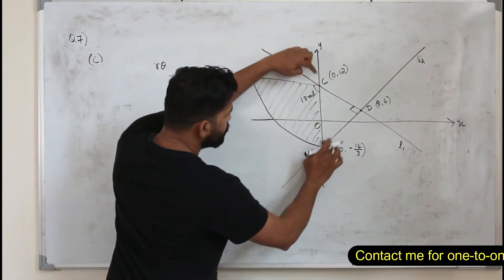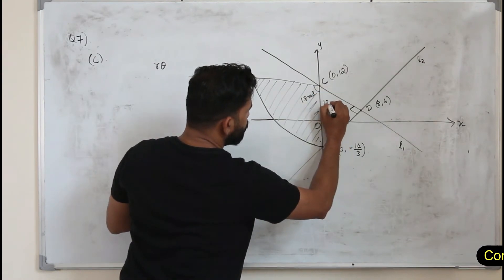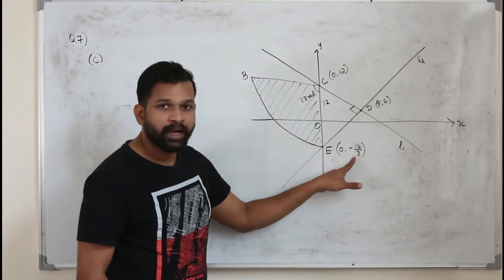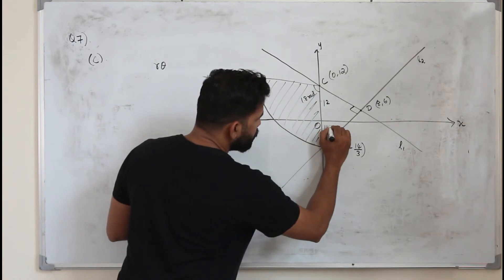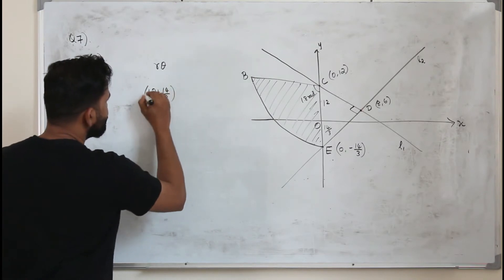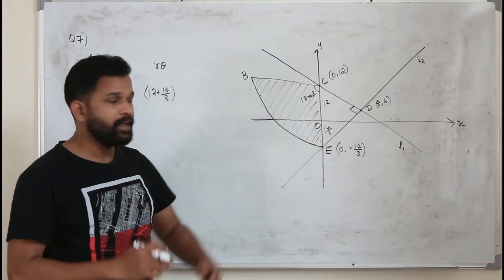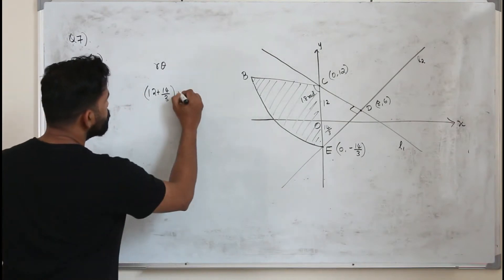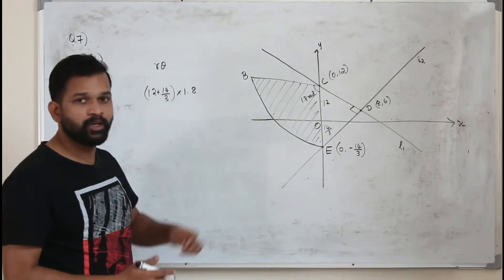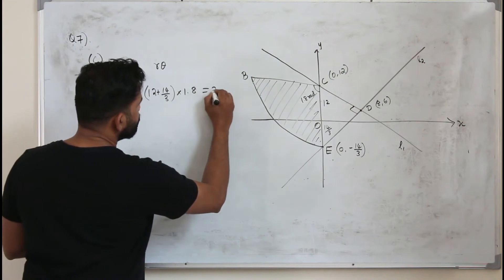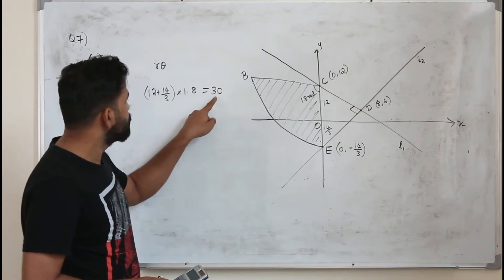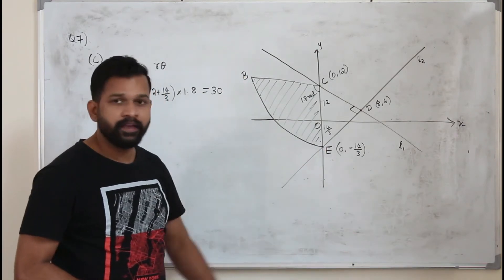The radius R is this length on the y-axis. The y-coordinate of C is 12, so that length is 12. The y-coordinate of E is minus 14 over 3, so that length is 14 over 3. The total radius is 12 plus 14 over 3, multiplied by theta 1.8. Simplifying gives arc length equals 30. No unit is given, so just write 30.